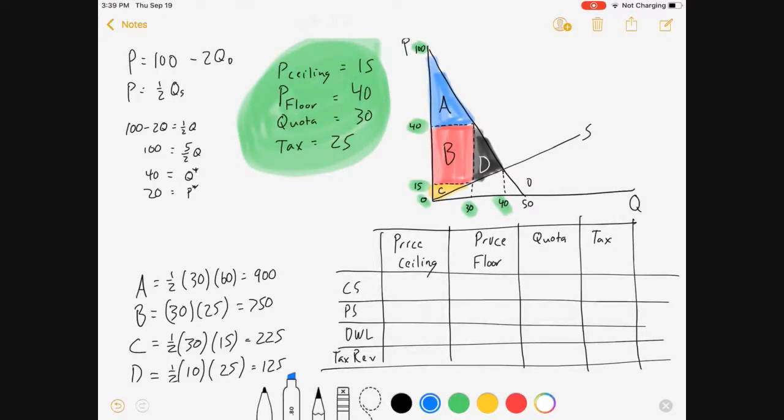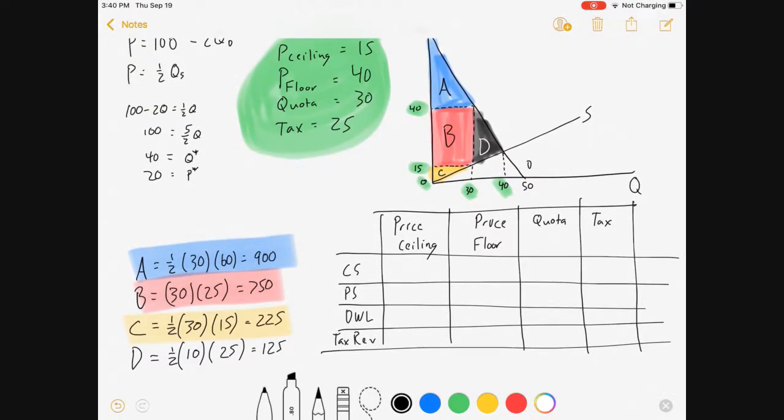The area for A is half times base times height, the base being the market quantity 30, the height being the gap between 100 and that demand price. A is 900. B is the gap between the demand price and the sale price times the market quantity of 30. C is everything below the price above the supply curve. That triangle is 15 high and 30 across. And D then is everything between the market quantity and the equilibrium quantity and between the demand price and the supply price.